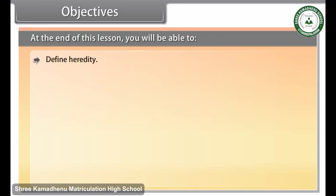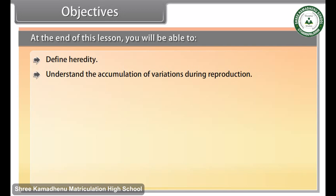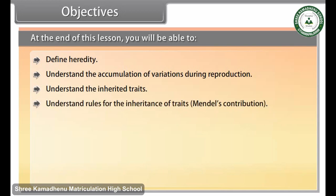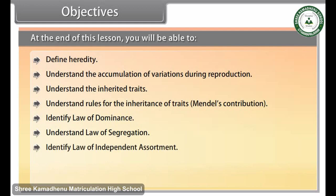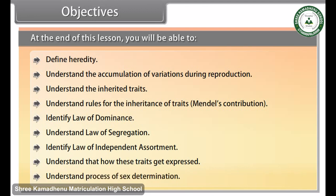Objectives: At the end of this lesson you'll be able to define heredity, understand the accumulation of variations during reproduction, understand the inherited traits, understand rules for the inheritance of traits, Mendel's contribution, identify the law of dominance, understand the law of segregation, identify the law of independent assortment, understand how these traits get expressed, and understand the process of sex determination.